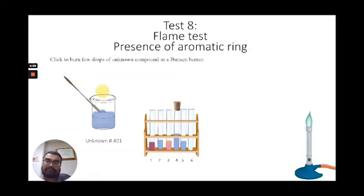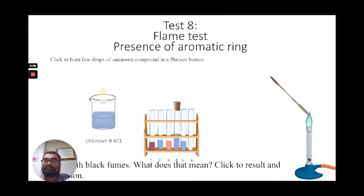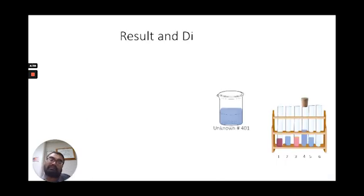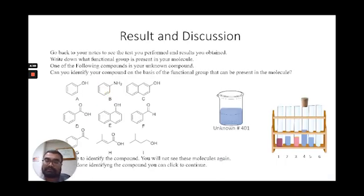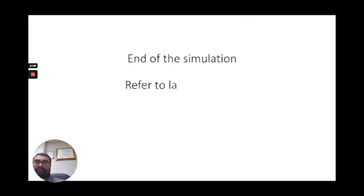The other test was a flame test — they burn the compound in a flame and cool gases pop up. Once they complete all the tests, the test and result discussion section appears. Out of nine given compounds, they have to correctly identify their own unknown compound based on the positive tests obtained. Then that is the end of the simulation and they click to finish.